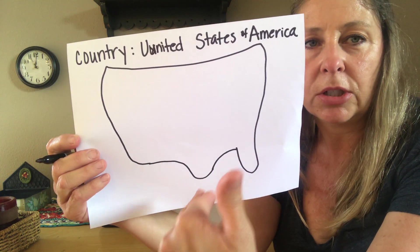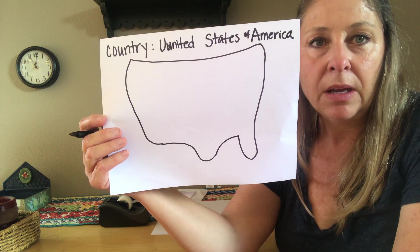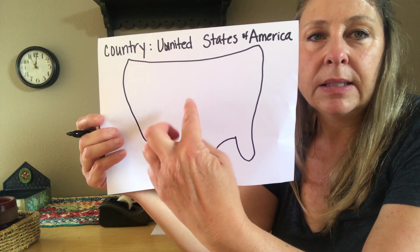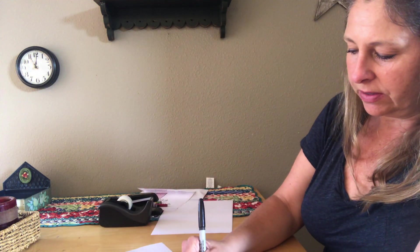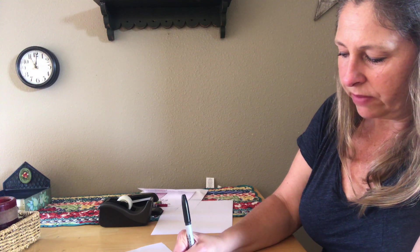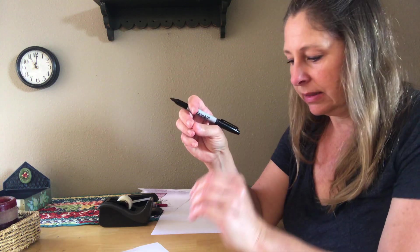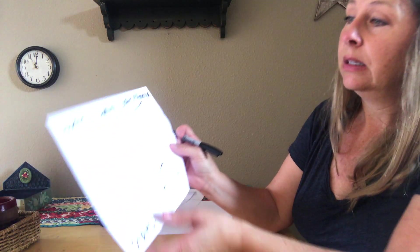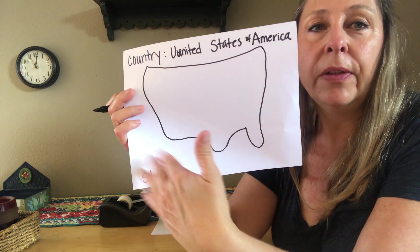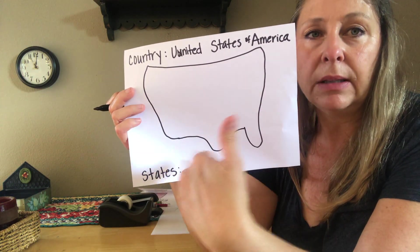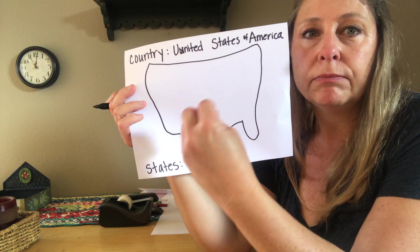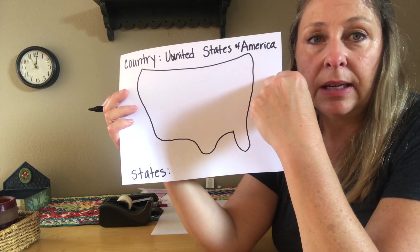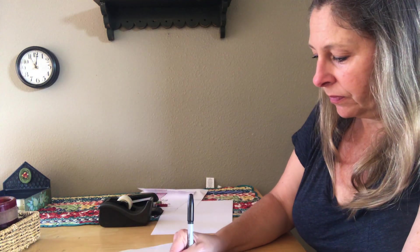Inside this picture here I want you to picture this being like a puzzle. And inside this puzzle there are 50 pieces. Those 50 pieces are called the states. So if you have a big puzzle and you've got all these little pieces, those would be the states. So our state is — do you guys know — California.